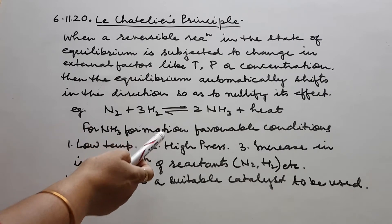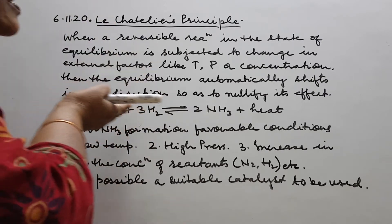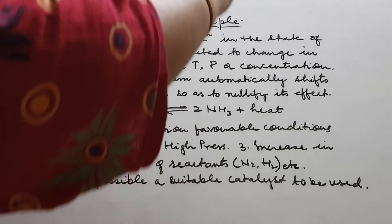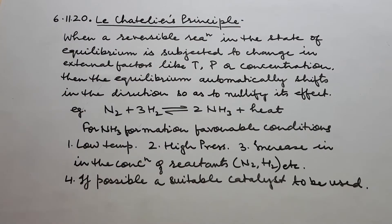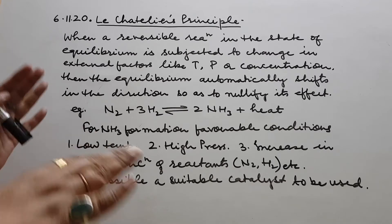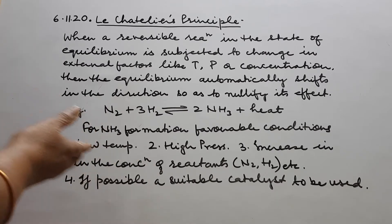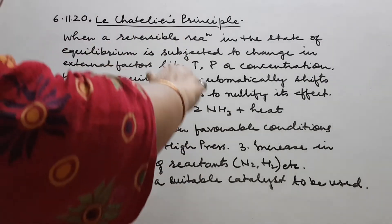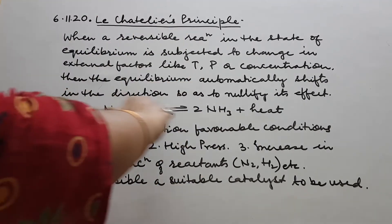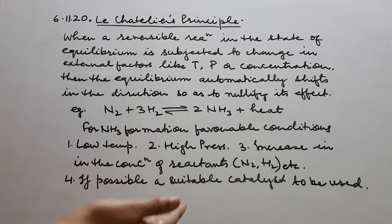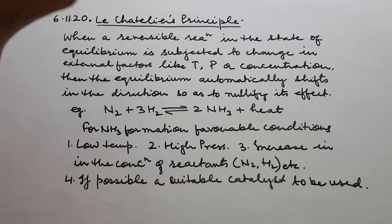Like N2 plus 3H2, so remember children, whenever a reaction proceeds with lowering in volume or say lowering in the number of moles of your products, the suitable condition is pressure should be increased. May it be any reaction. If it proceeds with a decrease in the number of moles or say decrease in the volume of the products, here as it is 3 and 1, 4 volume, here is 2 volume or say number of moles, you should always increase the pressure. So high pressure.